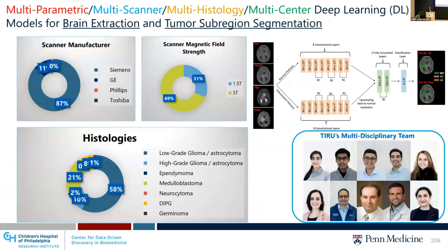What we did at our group was to use AI models developed on adult brain scans and apply transfer learning to adapt them to pediatric brain scans. We developed models for brain extraction and tumor sub-region segmentation using deep learning in a cohort of multi-parametric MRI scans acquired on multiple scanners, across multiple histologies and multiple centers.